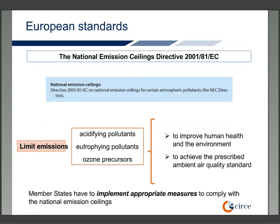The National Emission Ceilings (NEC) Directive aims to limit emissions of acidifying and eutrophying pollutants and ozone precursors, in order to improve the protection of human health and environment and to achieve prescribed ambient air quality standards. To achieve this, it sets upper limits — national emission ceilings — to be achieved by each member state for total emissions of four pollutants responsible for acidification, soil eutrophication and ground level ozone pollution: sulfur dioxide, nitrogen oxides, volatile organic carbon, and ammonia. Member states have to implement appropriate measures to comply with their national emission ceilings.